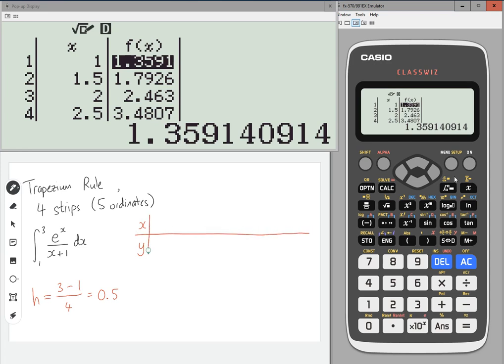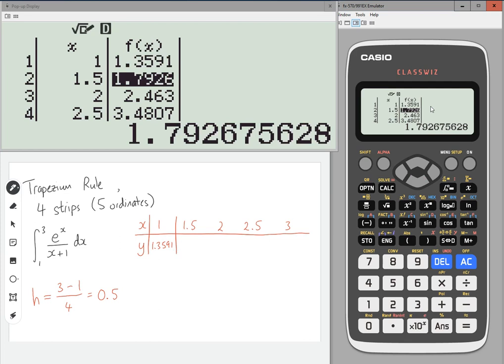I would want x's and y's. So we are starting at one, and we're going 1.5, then 2, then 2.5, and then 3. And then we can type in 1.3591, and then we've got 1.7927. I'll round each of these to four decimal places.